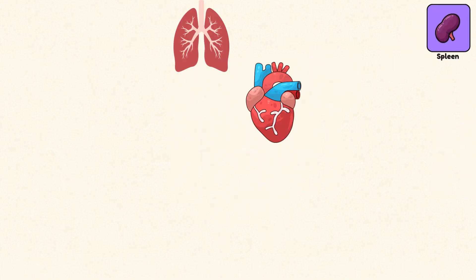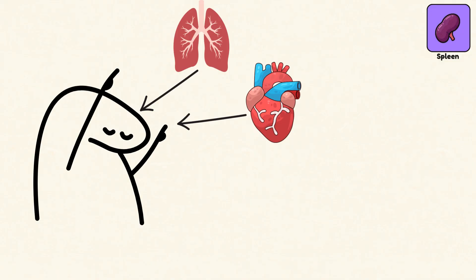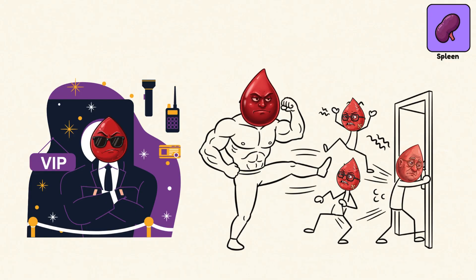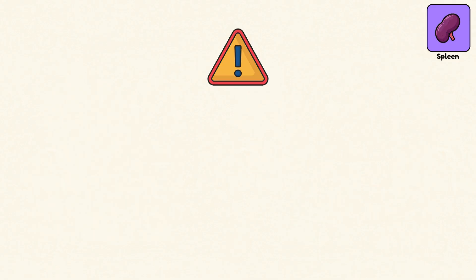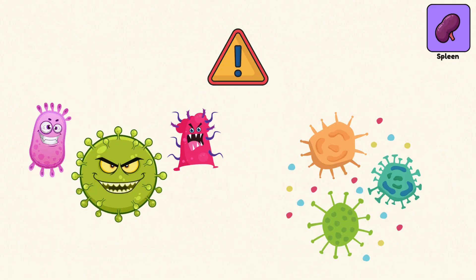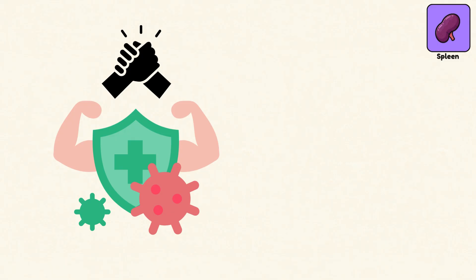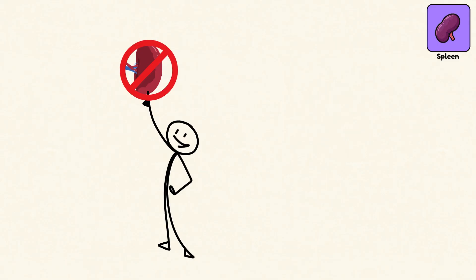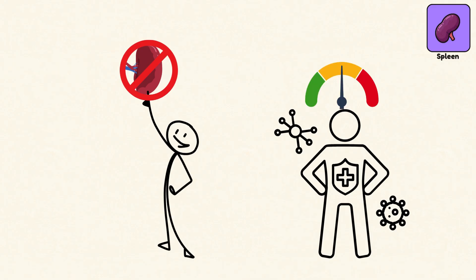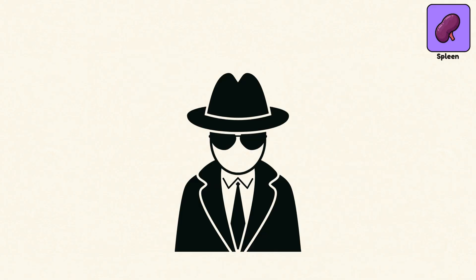While the heart and lungs focus on keeping you alive, the spleen is watching your blood quality. Think of it as a blood bouncer, removing old, damaged red blood cells, and spotting threats like bacteria and viruses. It also supports your immune system by creating white blood cells. You can live without it, but your immune system won't be quite as sharp. It's the behind-the-scenes protector you probably forgot you had.